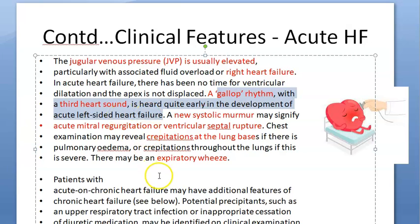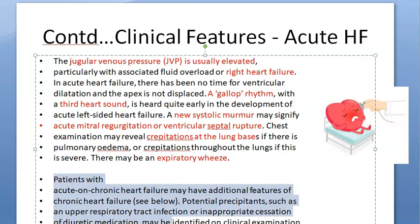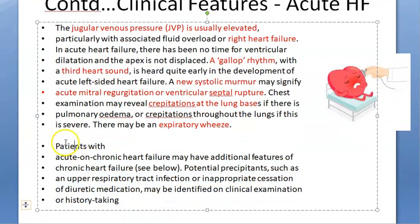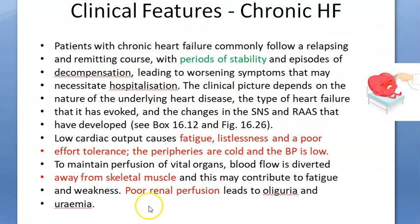Crepitations are heard at the lung bases in acute right-sided heart failure; if severe, throughout the lung because of pulmonary edema. For acute-on-chronic patients, ask whether they took their diuretics properly and whether they had any infection that triggered the episode. Chronic heart failure features: fatigue, listlessness, poor effort tolerance, cold peripheries, low BP, body perfusing vital organs — skeletal muscles and kidney are under-perfused — causing fatigue, oliguria, and uraemia.